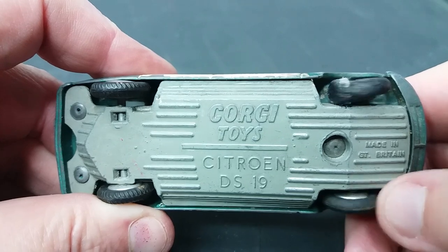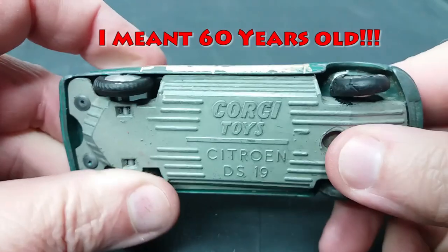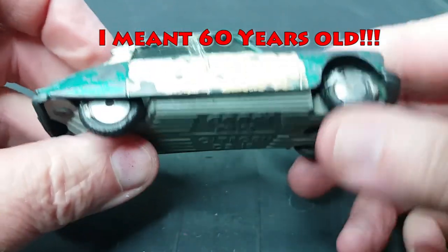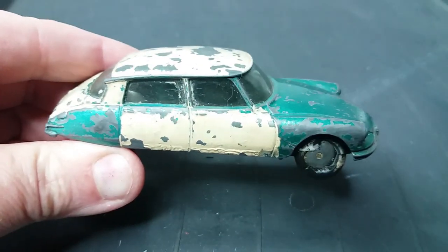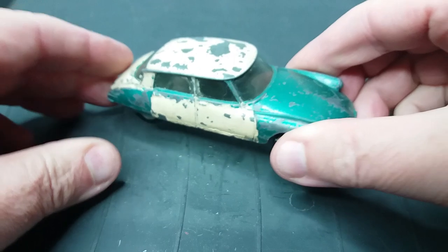Now this toy car is over 70 years old and is showing some signs of wear. As you can see one of the tires has started to rot, the paintwork is shot and someone's repainted it as a police car I think.